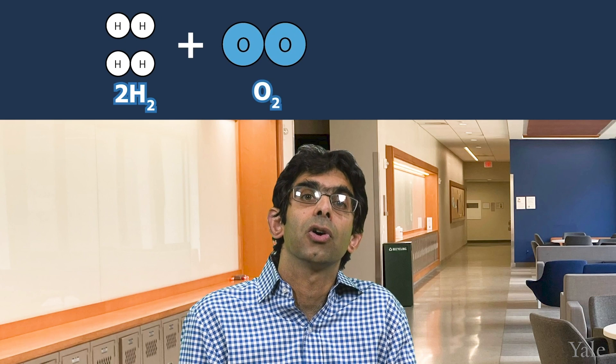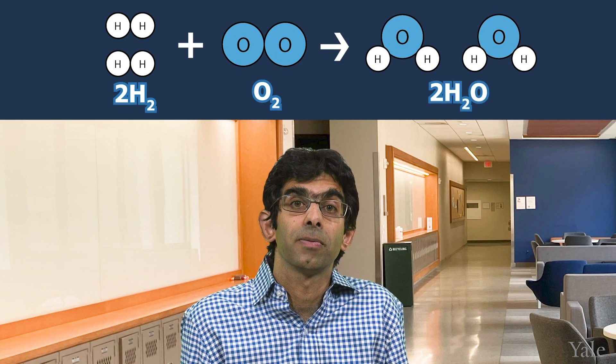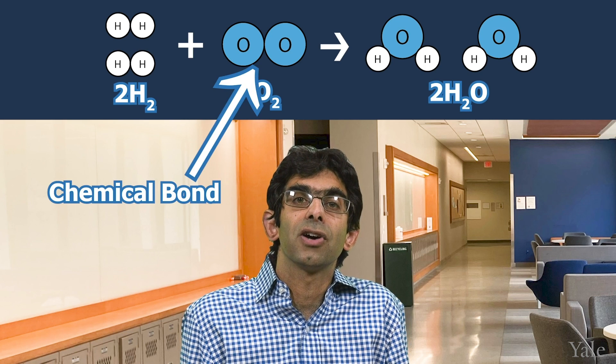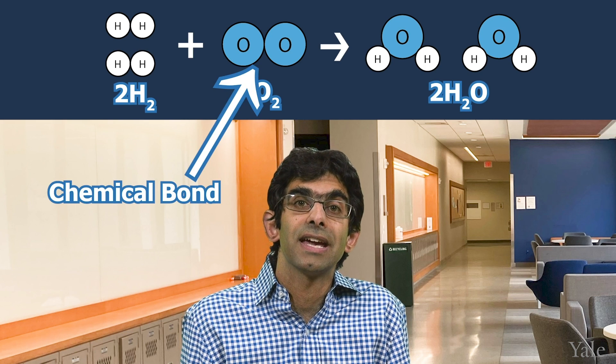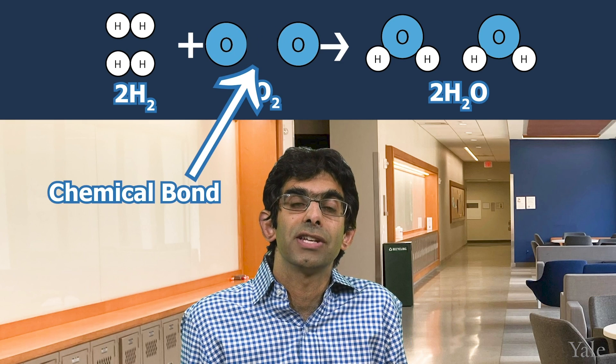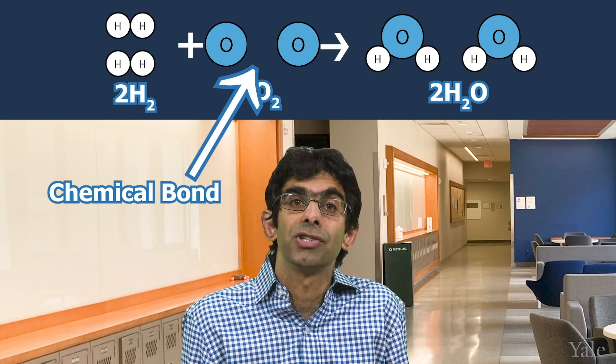For example, water, or H2O, comprises two hydrogen atoms and one oxygen atom. In this chemical reaction, hydrogen (H2) and oxygen (O2) react to form water. The chemical bonds holding the diatomic oxygen molecules together are broken so that each oxygen atom can then bond with two hydrogen atoms. By rearranging the way that atoms are attached to one another, reactions like this can occur, where one molecule is transformed into another.